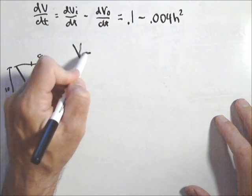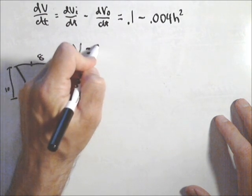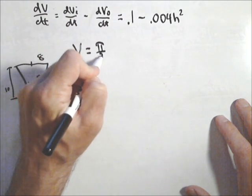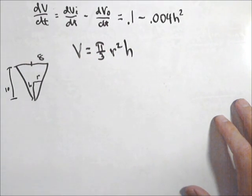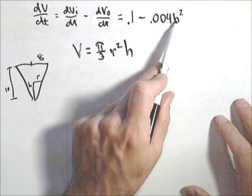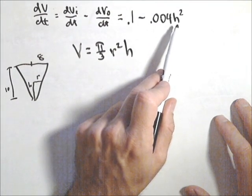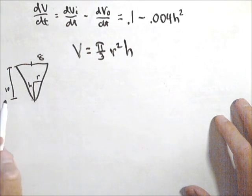So next thing you do with a related rates problem is you set up a formula for the volume. For a cone, it's π/3 r²h. Now, for our particular problem, notice everything is in h, including this dV/dt. So we'd like to get this whole volume formula in terms of h, so we're going to use the fact that we have similar triangles.